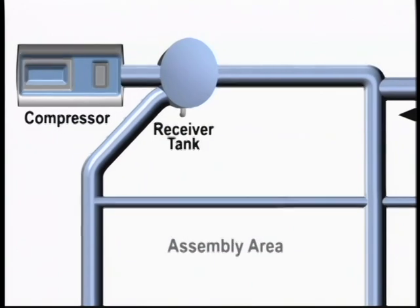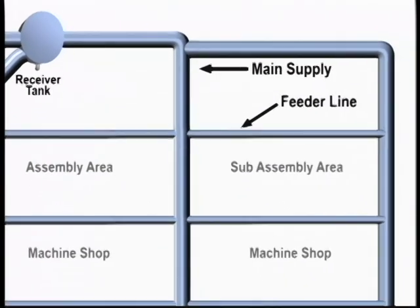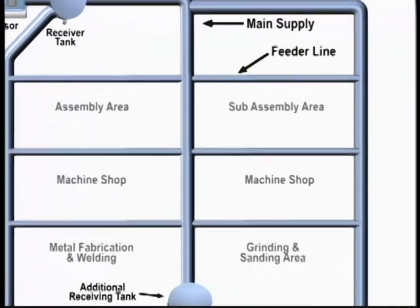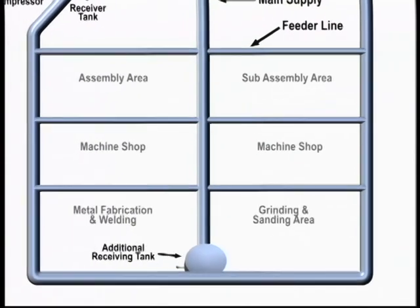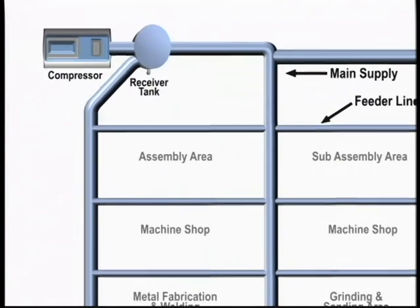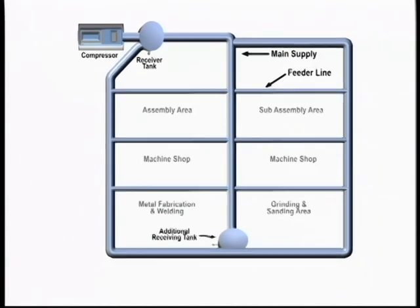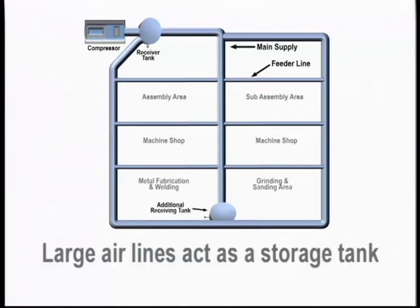An air loop system layout will give a better chance of supplying the required volume of air to all tools in the system. All the feeder line pipes should connect to the main supply line so that they are all interconnected. The main supply line and feeder lines should be as large as possible. That way, they also act as a storage tank to supply the volume of air whenever needed.